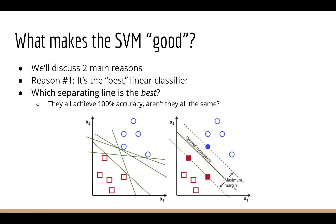The first thing I want to talk about is what makes the support vector machine a good model to use. There are two reasons I want to discuss. The first reason is in the context of linear classification. In linear classification, our job is to separate the colors using a line. You can see that there are multiple lines that can do the job — but are they all the same? The answer is no. It's easy to see that the line in the middle is likely the best line. There's no reason for this line to be off to one side or another, and there's no reason for this line to be rotated.